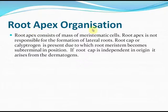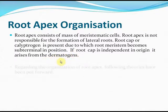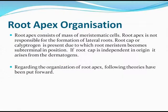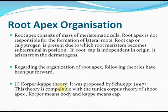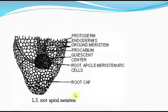Root apex organization consists of a mass of meristematic cells and is not responsible for formation of lateral roots. Root cap or calyptrogen is present, due to which the root meristem becomes sub-terminal in position. If the root cap is independent in origin, it arises from the dermatogen. The corpus cap theory proposed by Schmidt is comparable with the tunica corpus theory of the shoot apex. The lateral section of the root apical meristem shows the protoderm, endodermis, ground meristem, procambium, quiescent center, root apical meristem cells, and the root cap.